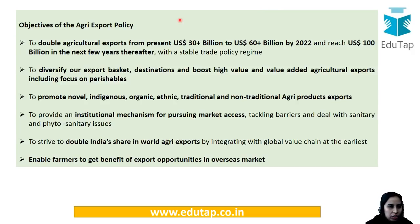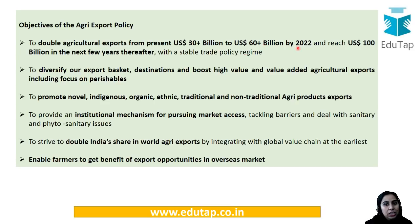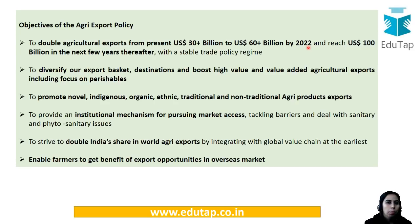The objectives of this particular policy are to double the agriculture exports from the present US dollar 30 billion to 60-plus billion by 2022. The year 2022 is very important — as you know, India is going to complete 75 years of independence, and all important targets are tied to it.